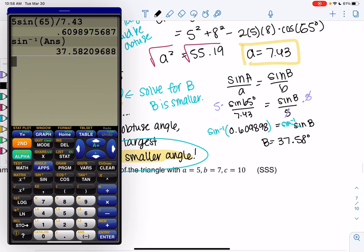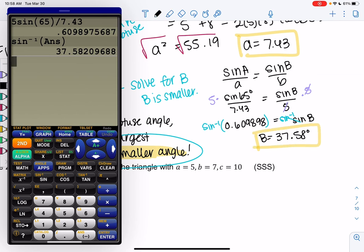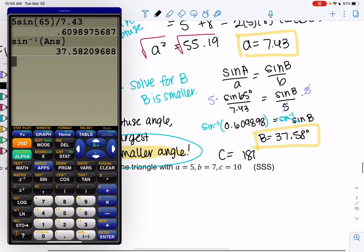And then the reason we don't need to worry about law of sines or cosines anymore is all the angles add up to 180. So we'll always just do 180 minus the other two angles for the last one.